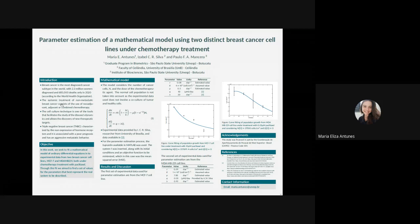The systemic treatment of non-metastatic breast cancer consists of the use of neoadjuvant, adjuvant, or combined chemotherapy, and the subtype of the disease guide the type of therapy to be administered.